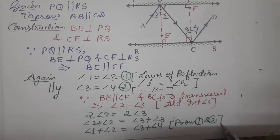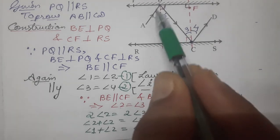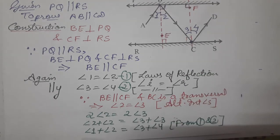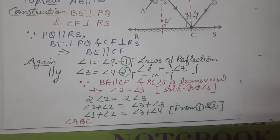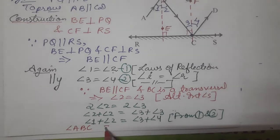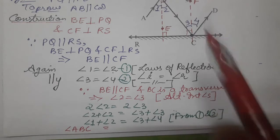Angle 1 plus angle 2 means angle ABC. And angle 3 plus angle 4 means angle BCD.